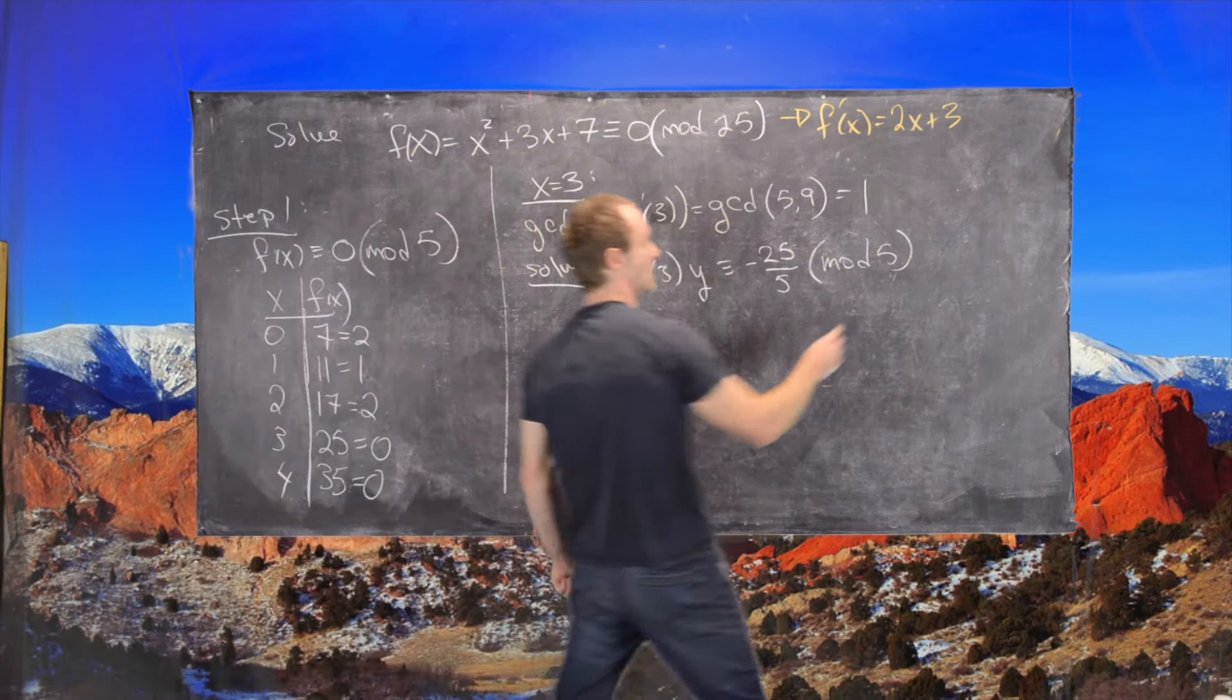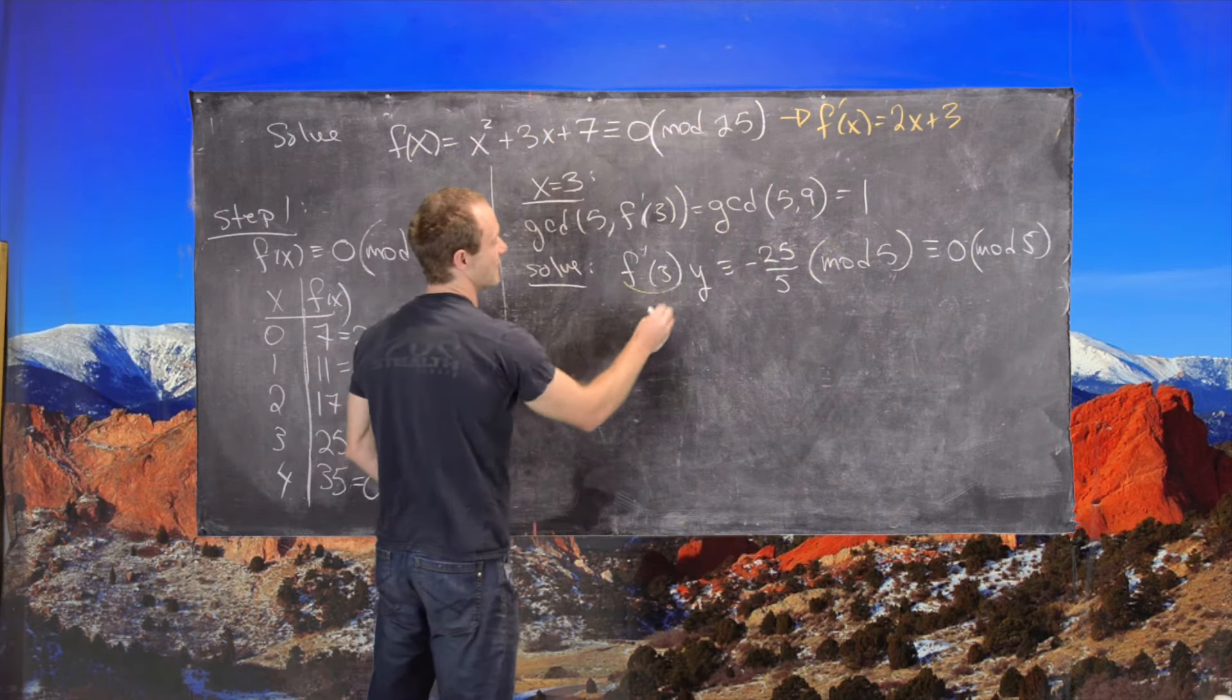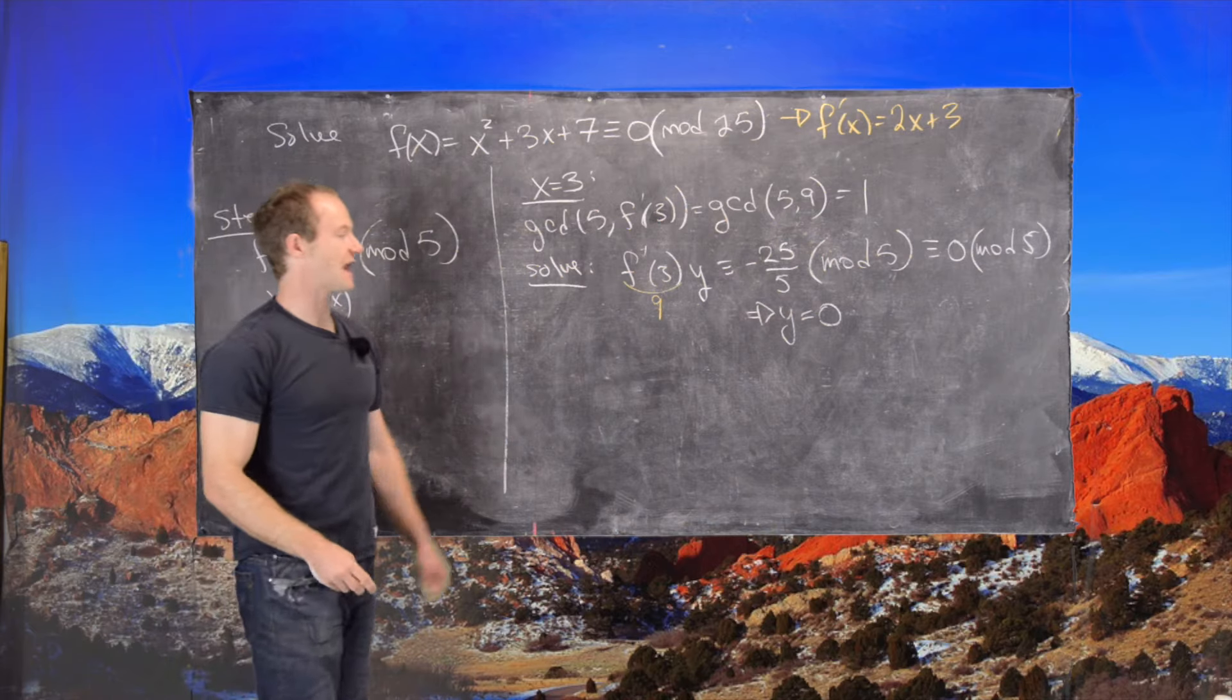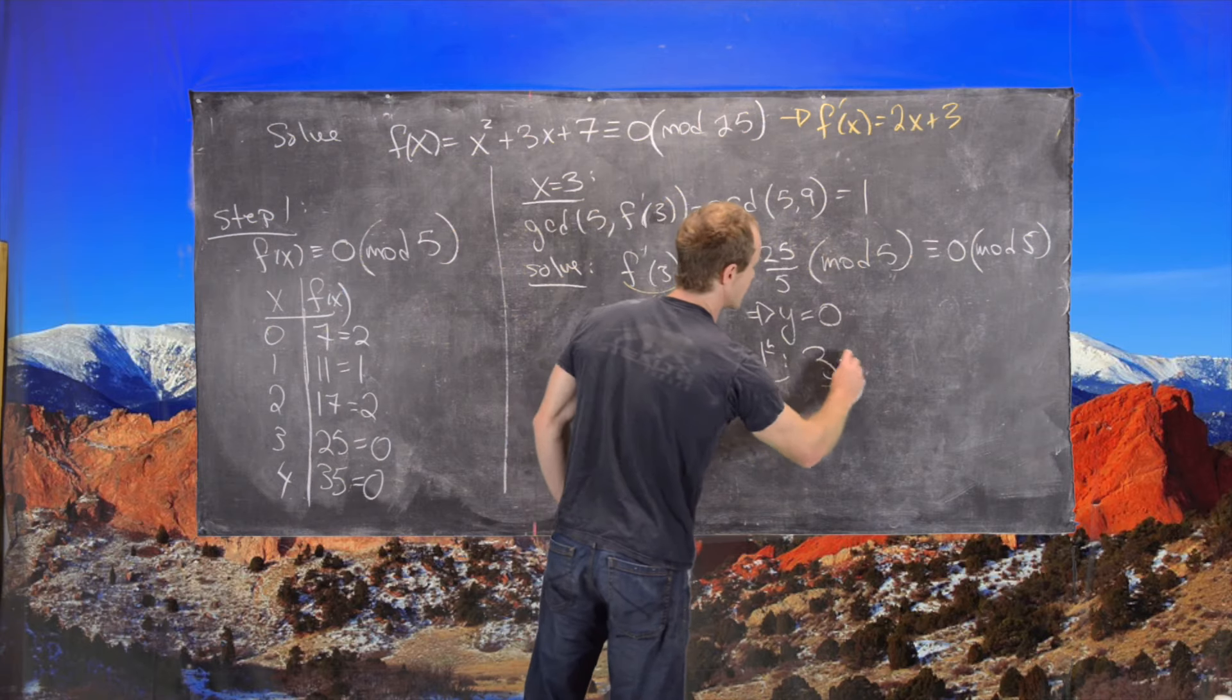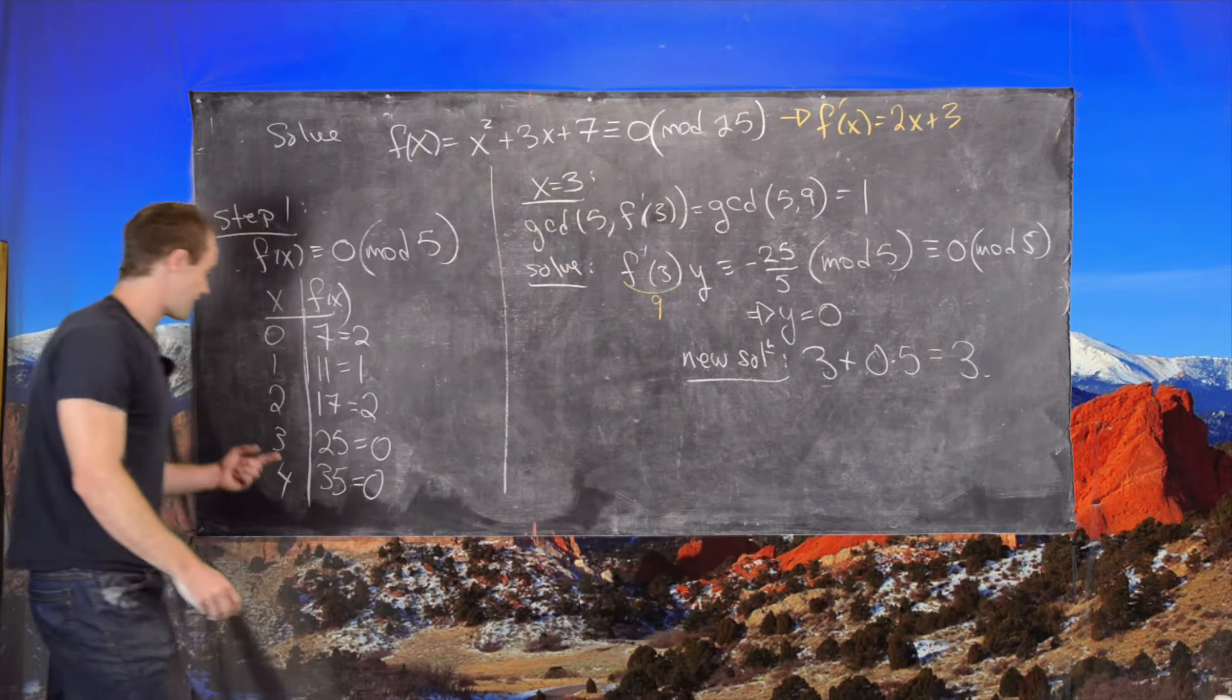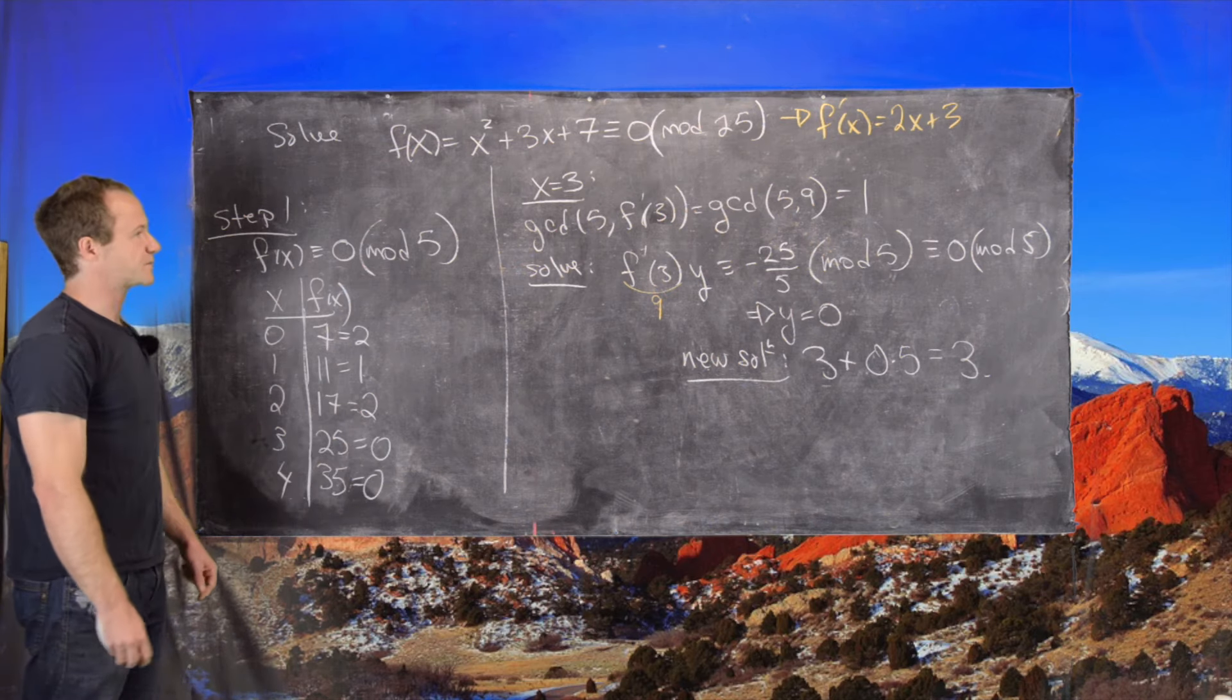So now notice that this obviously is congruent to 0 mod 5, which means our only solution here, even though in this case we have 9, our only solution here is y equals 0, which tells us that our new solution is 3 plus 0 times 5, but that's just equal to 3. And we notice that 3 was equal to 25 when we plugged it into the polynomial, and that is 0 mod 25 anyway.